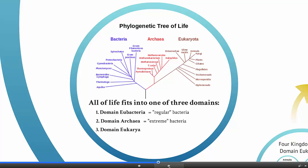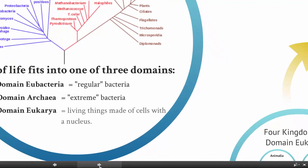Finally, we have the domain eukarya — eu means true and karya refers to nucleus, so these are the true nucleus organisms. Technically, these are any living things made of cells with a nucleus, and everything you think about that's not bacteria — from redwood trees to owls to grass — all of those things are going to be in the domain eukarya.